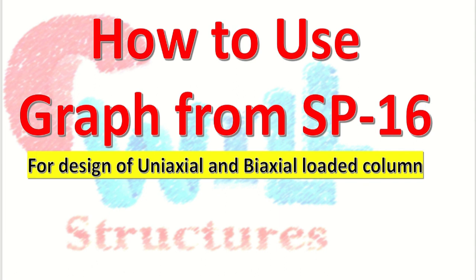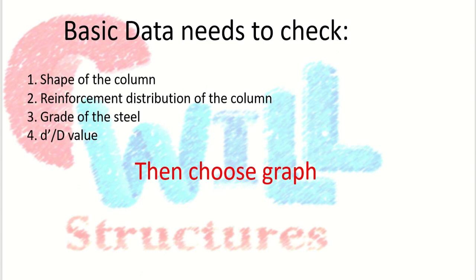These graphs are for the designing of uniaxial and biaxial loaded columns. Before choosing the graph, we need to check some basic data. The first one is the shape of the column — it may be rectangular or circular. Then the reinforcement distribution of the column: in a rectangular column, the reinforcement might be on two sides or on all four sides. The third data is the grade of steel, and finally the d'/D value, where d' is the effective cover of the column. After checking all of this data, we can determine which chart number to use for the particular column.